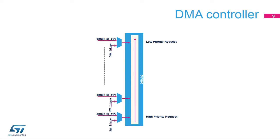The DMA controller provides access to eight streams with up to 115 channels or requests per stream. Each of the eight streams is connected to dedicated hardware DMA channels or requests. The priorities between DMA stream requests are software programmable — four levels consisting of very high, high, medium, and low — or hardware priority in case of equality; request zero has priority over request one, and so on. Each DMA controller stream request can be connected to DMA requests from up to 115 possible peripherals by the DMA request router, or DMAMUX. This selection is software configurable and allows a great number of peripherals to initiate DMA requests. Each stream also supports a software trigger for memory-to-memory transfers.